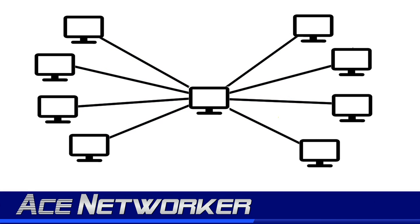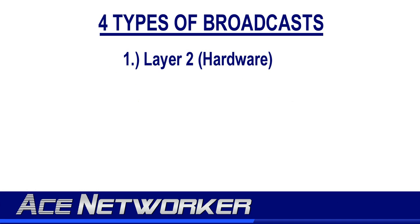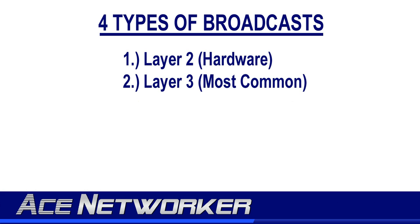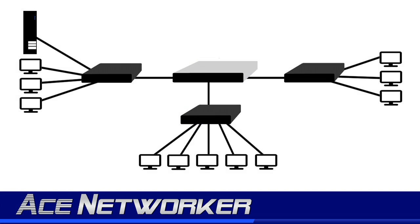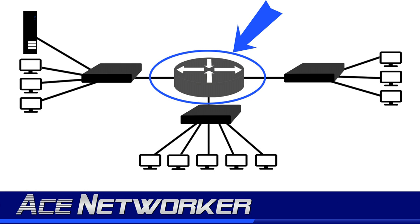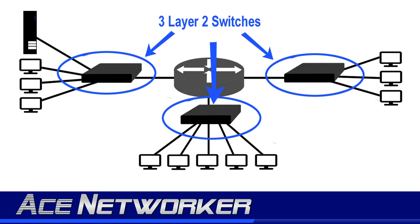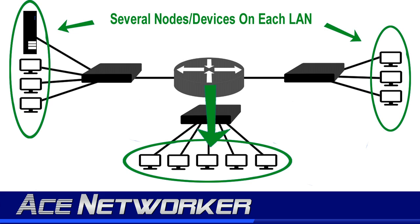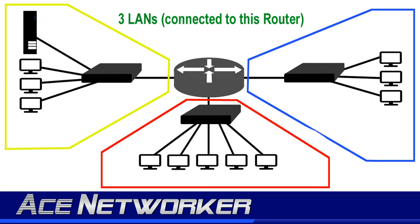To make broadcast simple, there are four types of broadcasts you'll encounter on a computer network: Layer 2 broadcasts, or hardware broadcasts; Layer 3 broadcasts, which are the most common; unicast; and multicast. Here's an example diagram — in the middle we have a router icon, connected to three Layer 2 switches, each with several hosts. This gives us three LANs on one router, one LAN per switch.